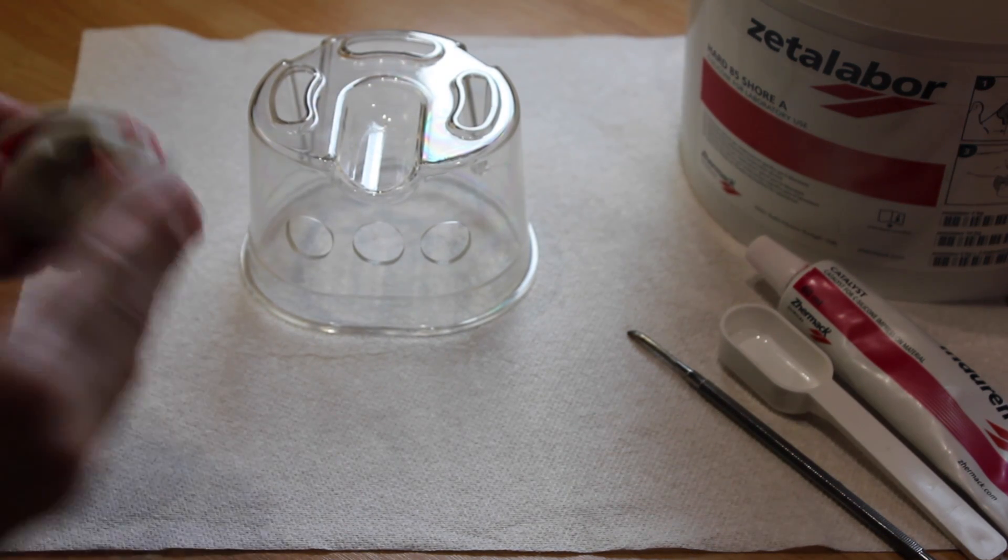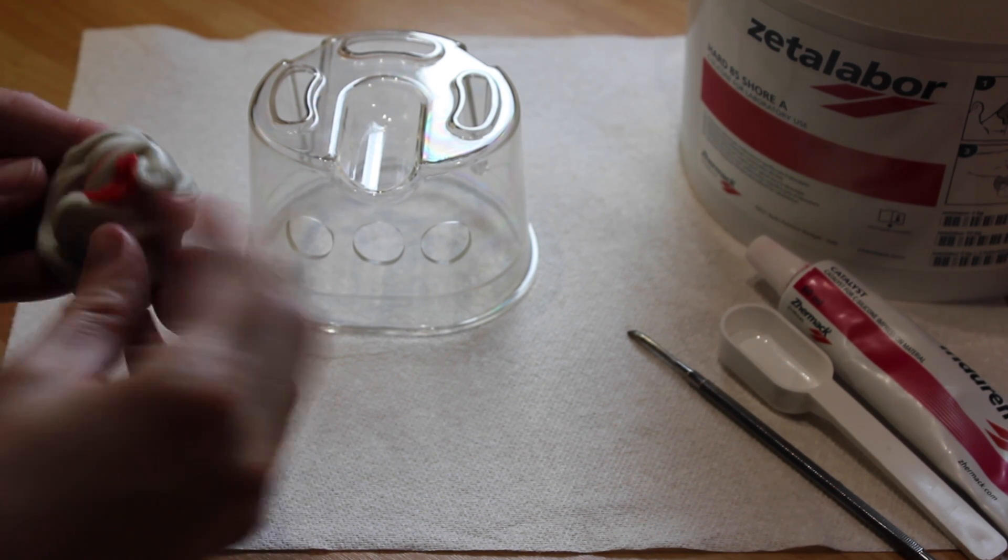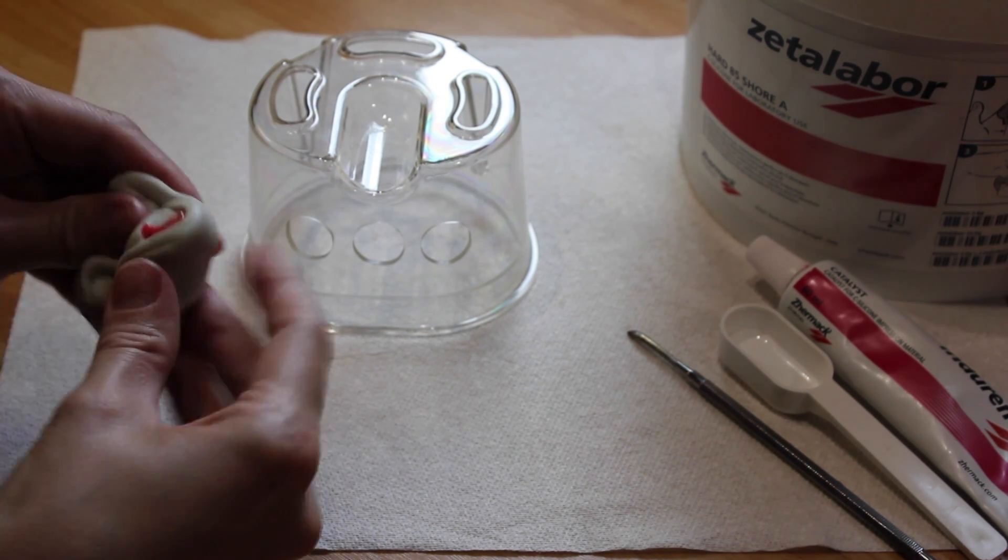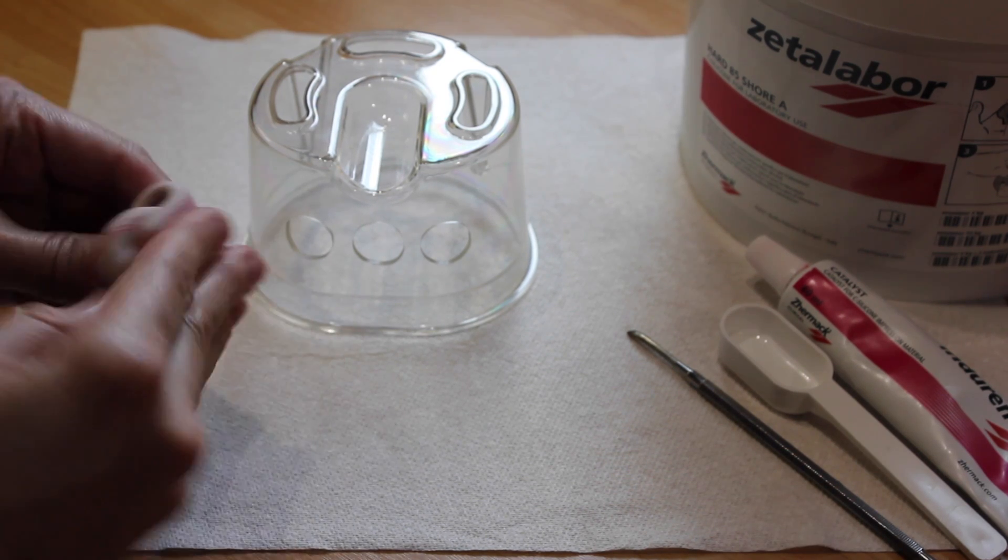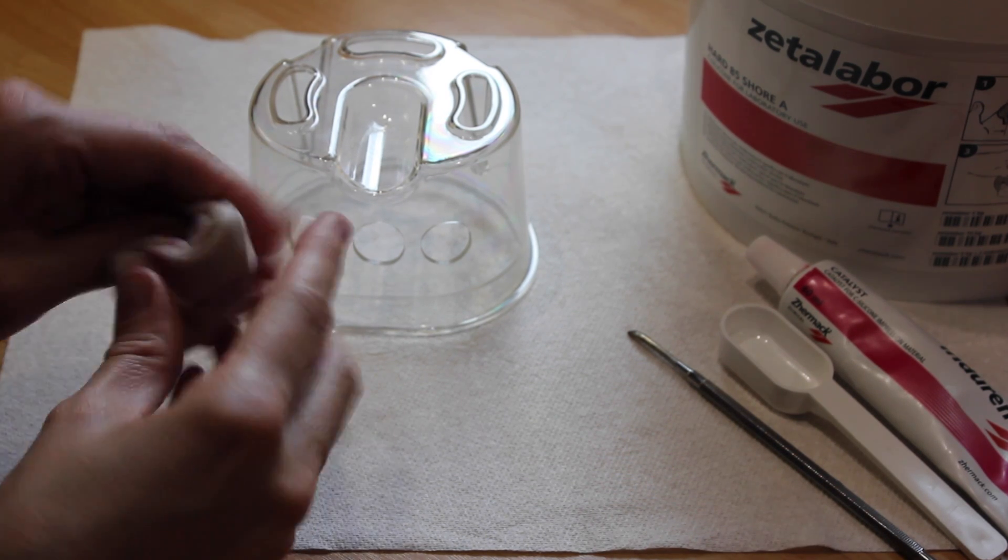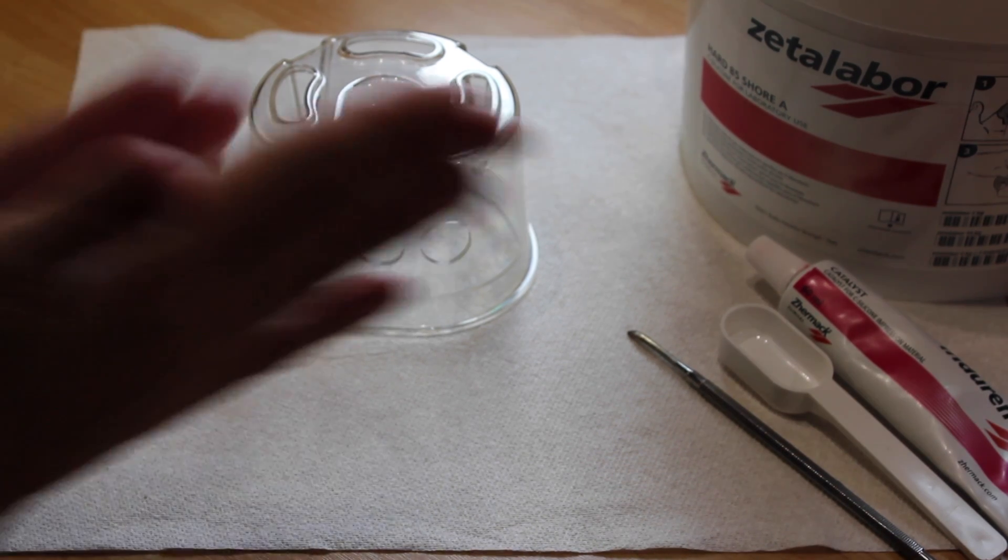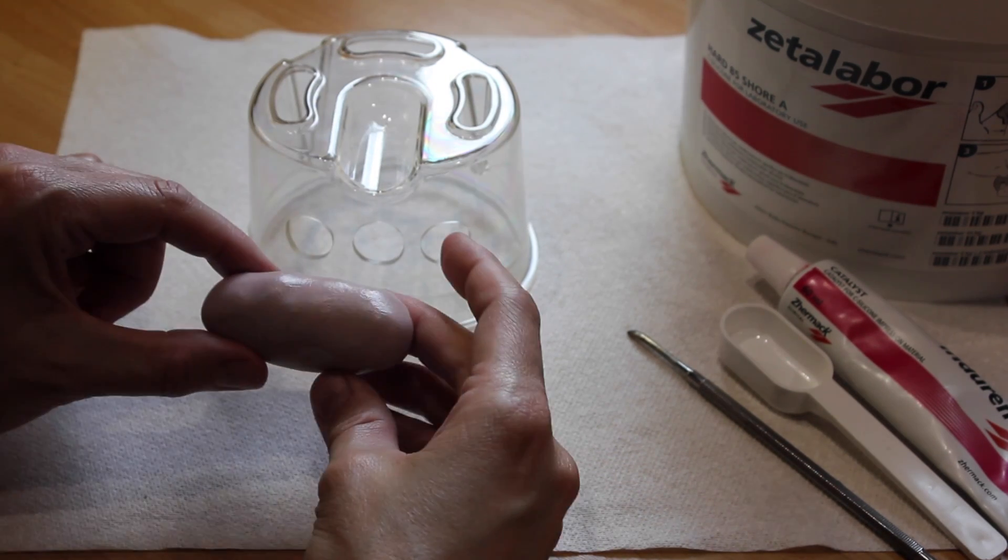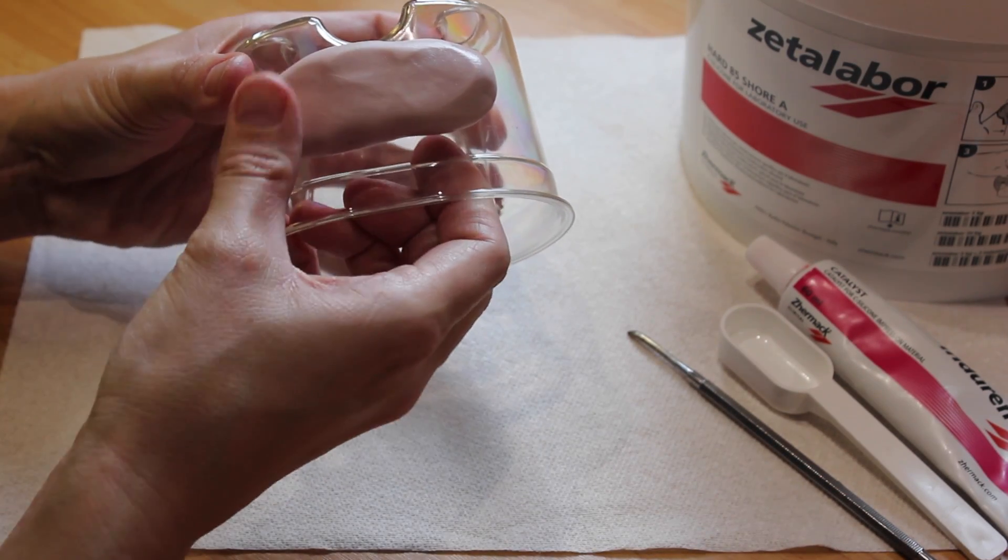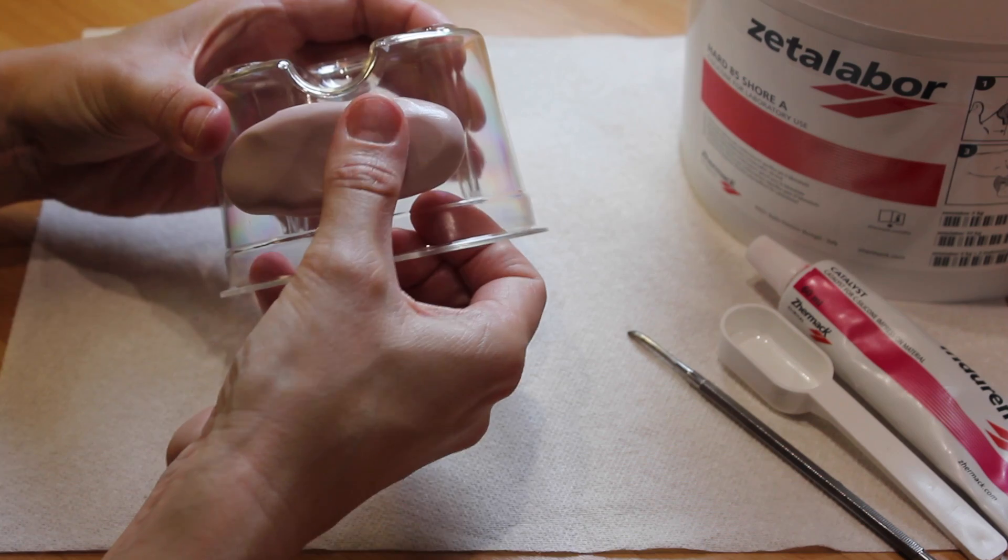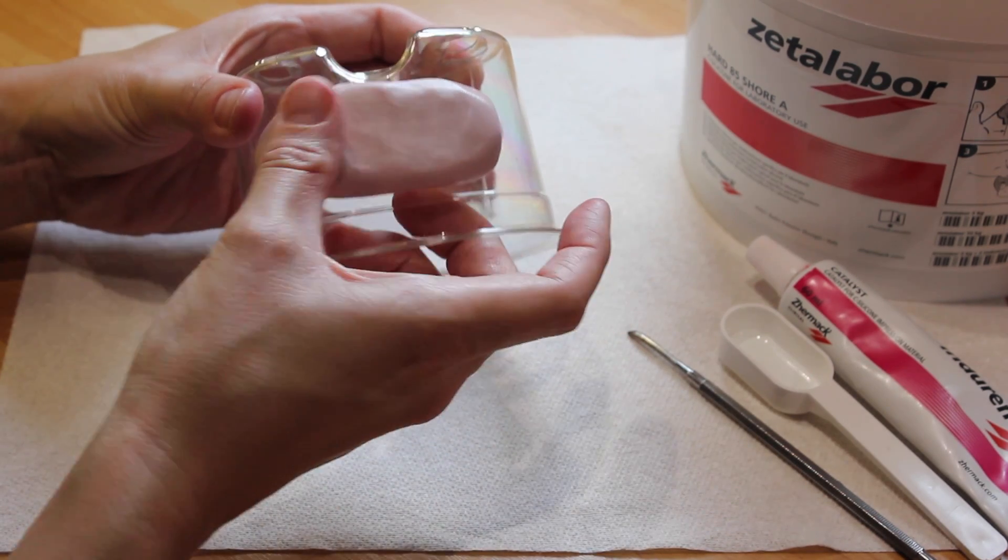I'm using Zeta Labore lab putty from Zermac which is a nice hard lab putty with 85 shaw. So roll that into a sausage and just gently place it over the holes. Don't push too far because you'll lock it in.